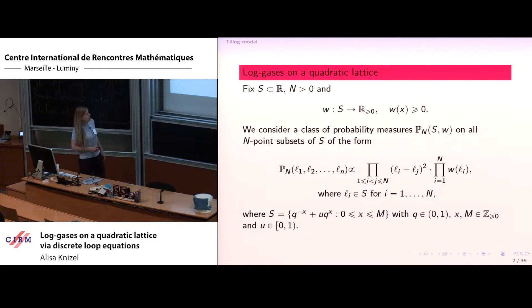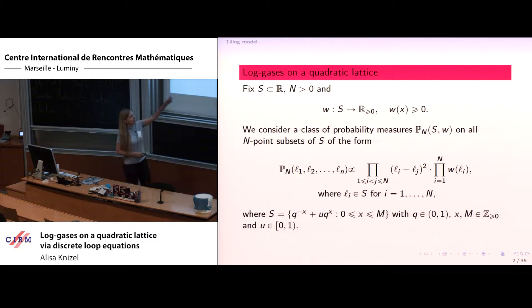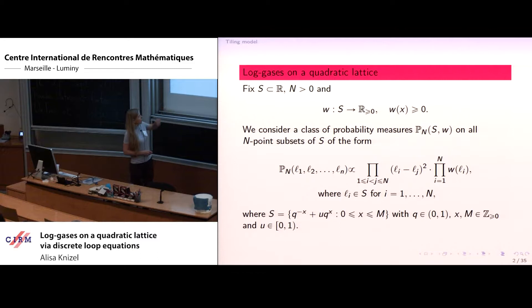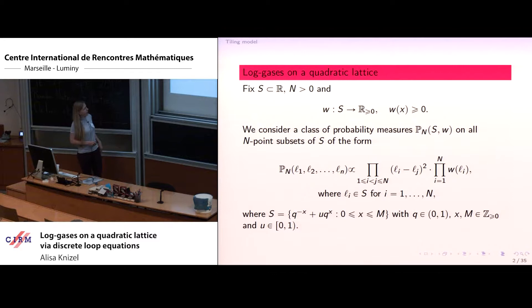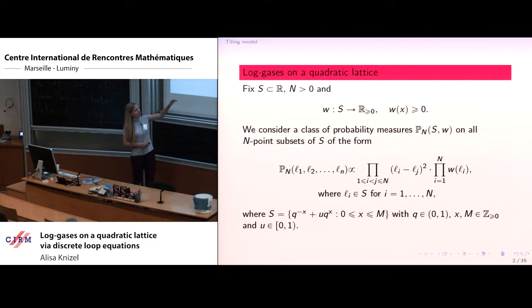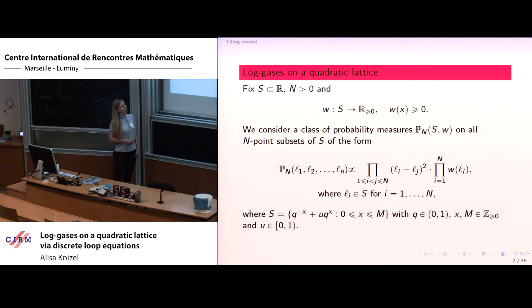We consider the probability measure on the set of all n-tuples of elements from S of the following form. We have the interaction of the Vandermonde type, and then the product of the weights computed at the locations L_i's separately. The set S depends on two real parameters Q and U, where Q is in (0,1), U is also in (0,1), and X is an integer parameterizing this set. In the context of orthogonal polynomials, this type of set is usually called a quadratic lattice.